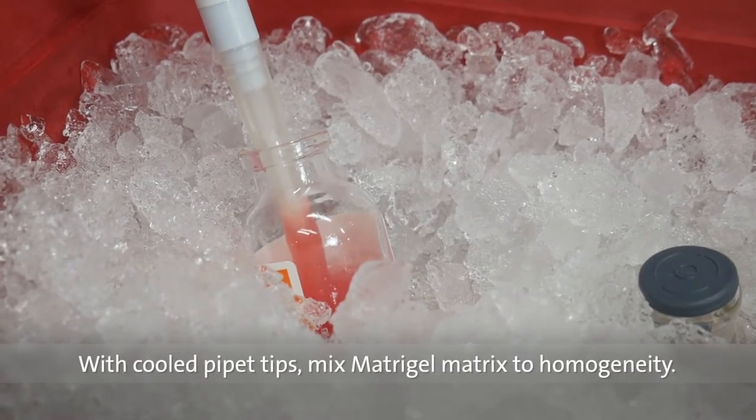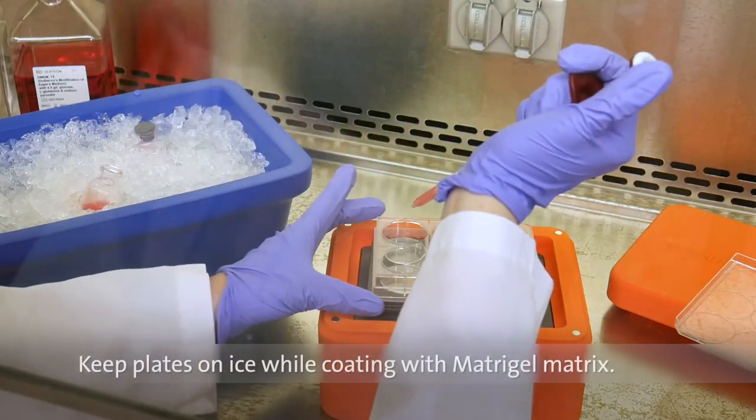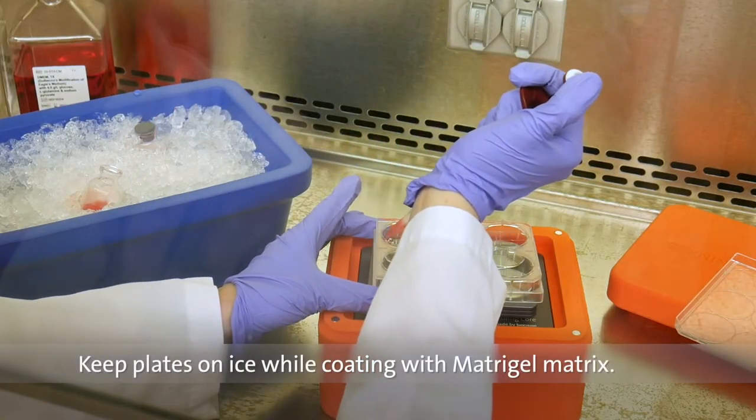Using cooled pipette tips, mix the Matrigel Matrix to homogeneity. Keep culture plates on ice and add 50 microliters per square centimeter.